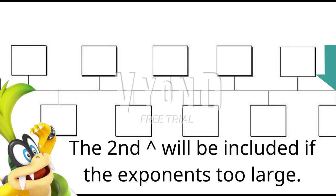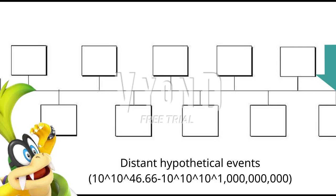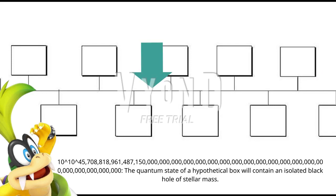If the exponent is too large, the second exponent should be included. This marks the end of the whole universe. 10 to the 10 to the 100 septillion: the multiverse will create another universe. Moving on to distant hypothetical events — this marks the beginning of the second universe.